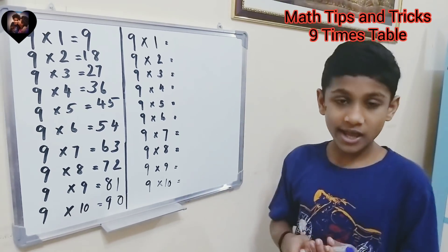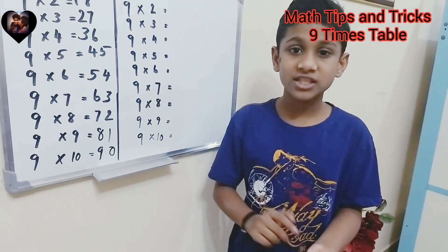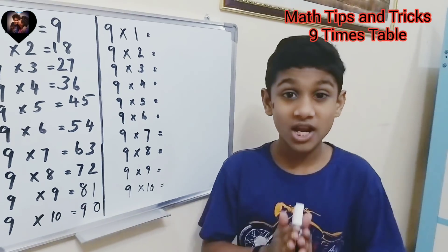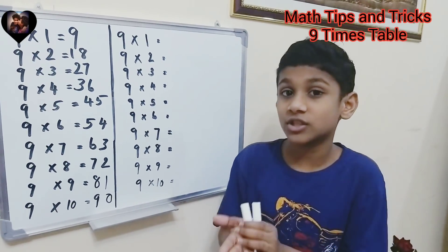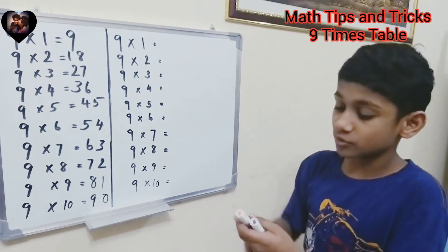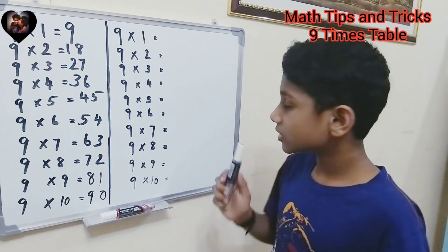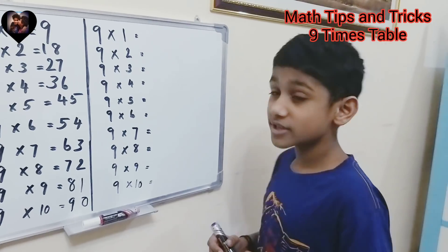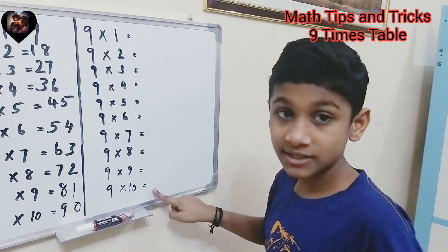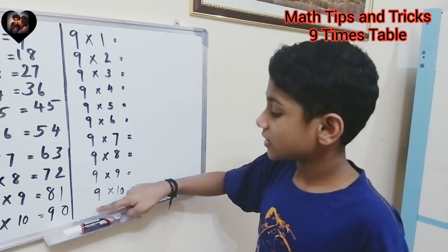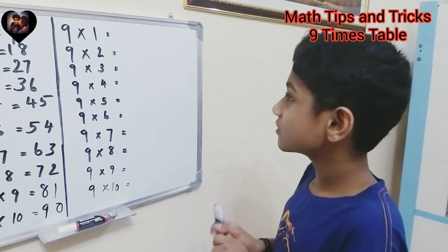Now let's get into the first trick. I have two color pens — red and blue — to help you understand how to do it. It's not necessary to use colored pens; if you're learning at school or home you can use a normal pencil. So the first trick is to just write zero to nine going down. If you're in higher classes you can go further, but I'm in fifth standard so I'll just do up to ten.